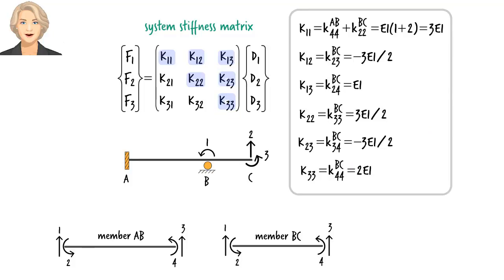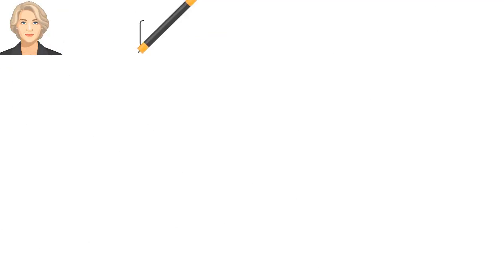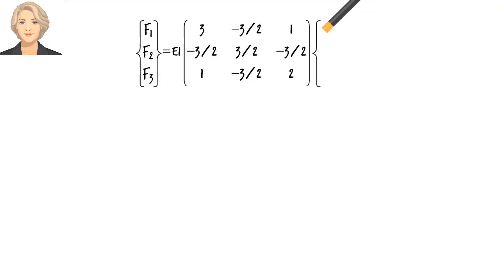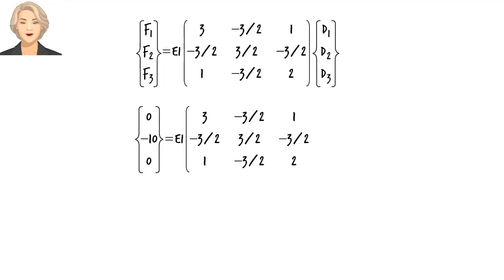By the way, stiffness matrices are always symmetrical. I'll explain the reason behind this in another lecture. For now, let's take advantage of this property and populate the rest of the matrix like this. Here is our system of equations. We know the elements of the force vector. They are therefore the only unknown is the displacement vector. Solving for it, say using Gaussian elimination method, we get...